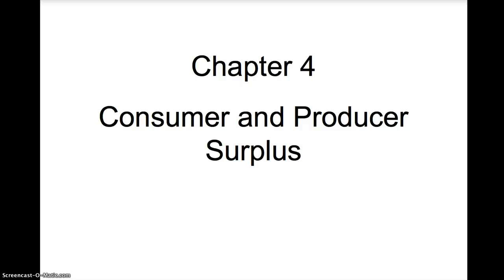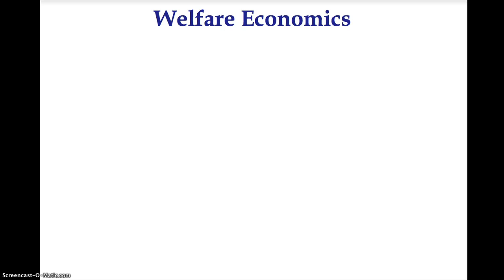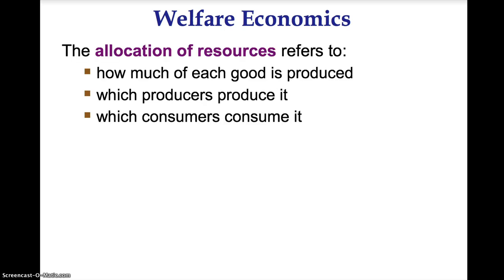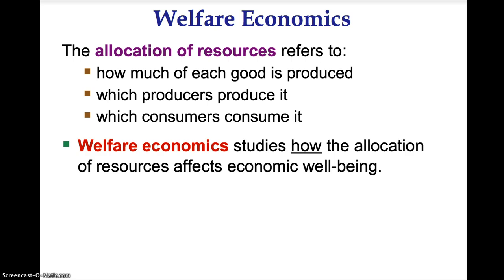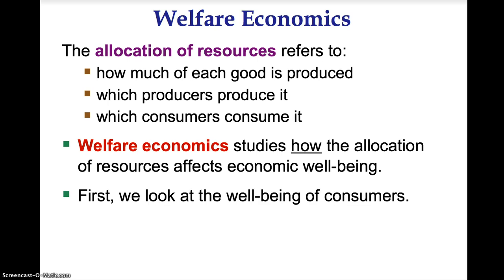Welcome to the chapter 4 lecture on consumer and producer surplus. This chapter focuses on welfare economics. Allocation of resources refers to how much of each good is produced, which producers produce it, and which consumers consume it. Welfare economics studies how the allocation of resources affects economic well-being. First we will look at the well-being of consumers, then we will look at the well-being of producers.